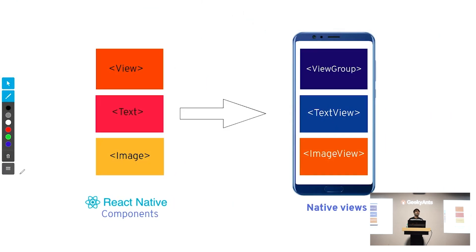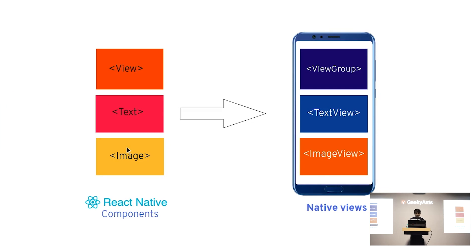Before I start, I want to clear up two points. The first point is that React Native is going to be rendered using native views. You can see on the screen we have React views: View, Text, Image. These are not going to be rendered directly on a real device. On a real device, the native views we have are ViewGroup, TextView, ImageView for Android, and UIView, UITextView for iOS. This is what gets rendered on the real device.